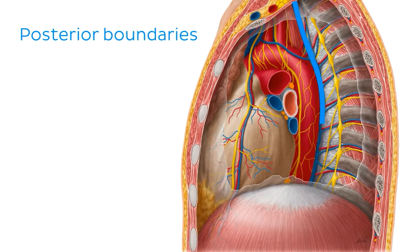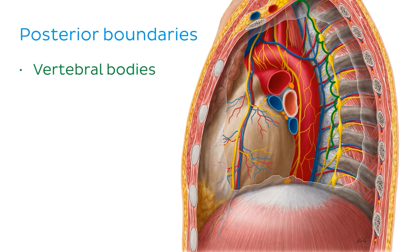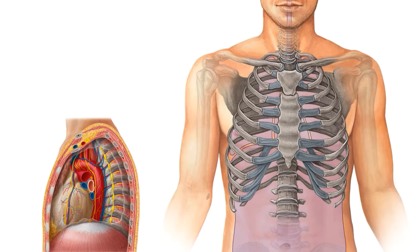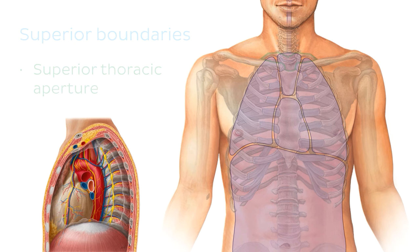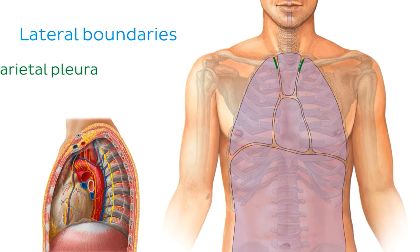The posterior boundary of the mediastinum is marked by the vertebral bodies of the superior thoracic vertebrae. Knowing the anterior and posterior borders, we can now define the superior most border as the superior thoracic aperture, delineated by the manubrium of the sternum, following around the superior border of the first rib to the T1 vertebral body. Laterally, since the mediastinum is located between the pleural sacs, the parietal pleura of each lung provides the lateral border for each side of the mediastinum.